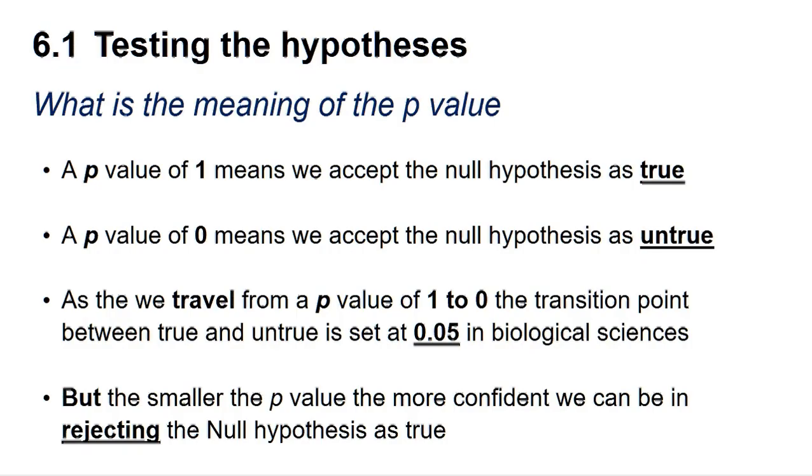But what does this mean? A p-value of 1 means we can accept the null hypothesis as true, whereas a p-value of 0 means we can accept the null hypothesis as untrue. As we travel from a p-value of 1 to 0, the transition point between true and untrue is set at 0.05 in the biological sciences. But the smaller the p-value, the more confident we can be in rejecting the null hypothesis.